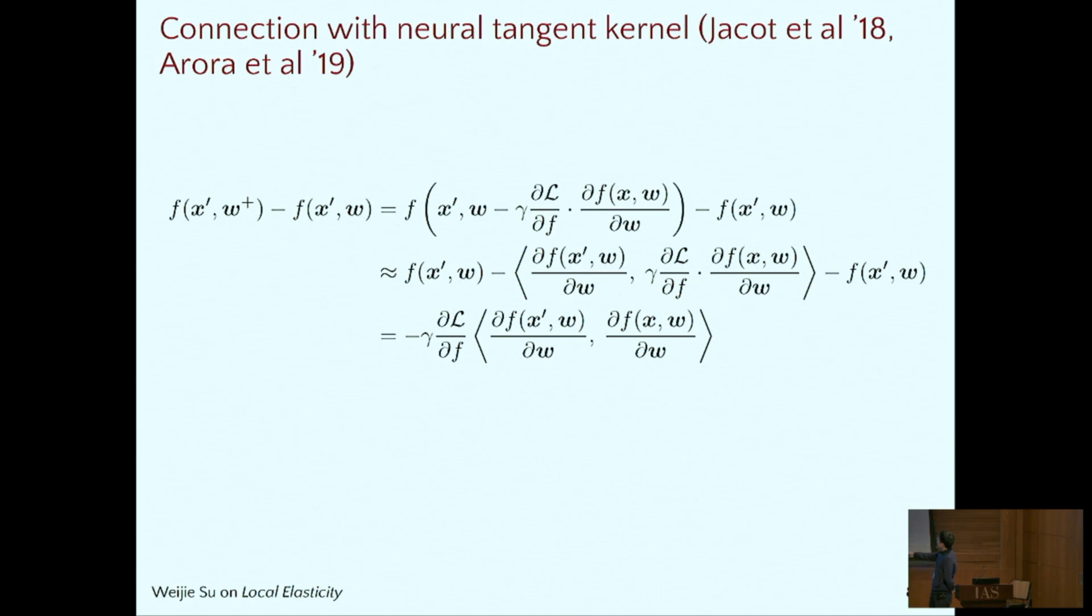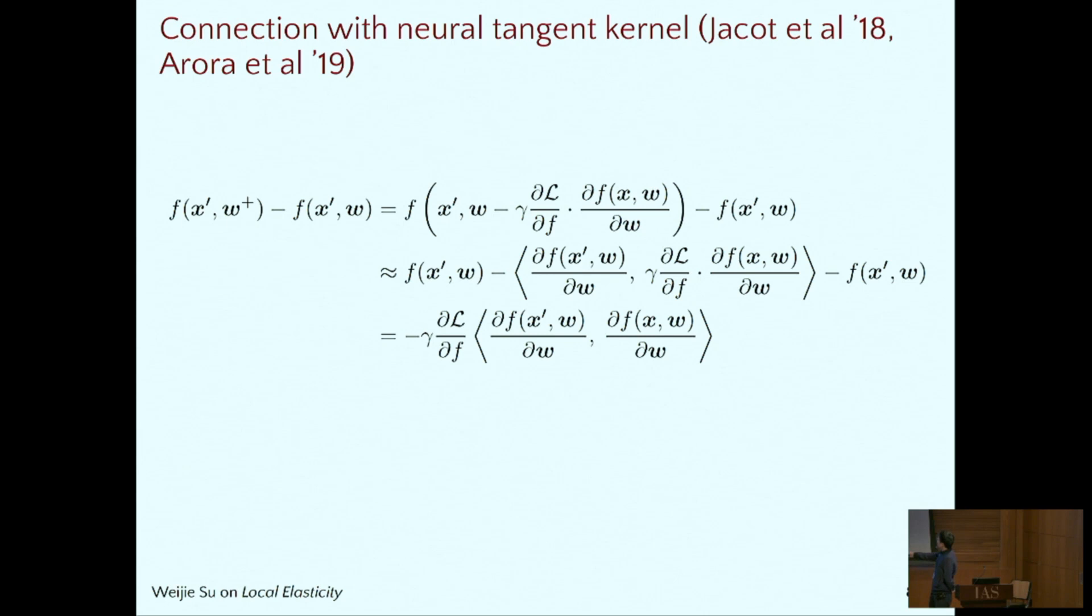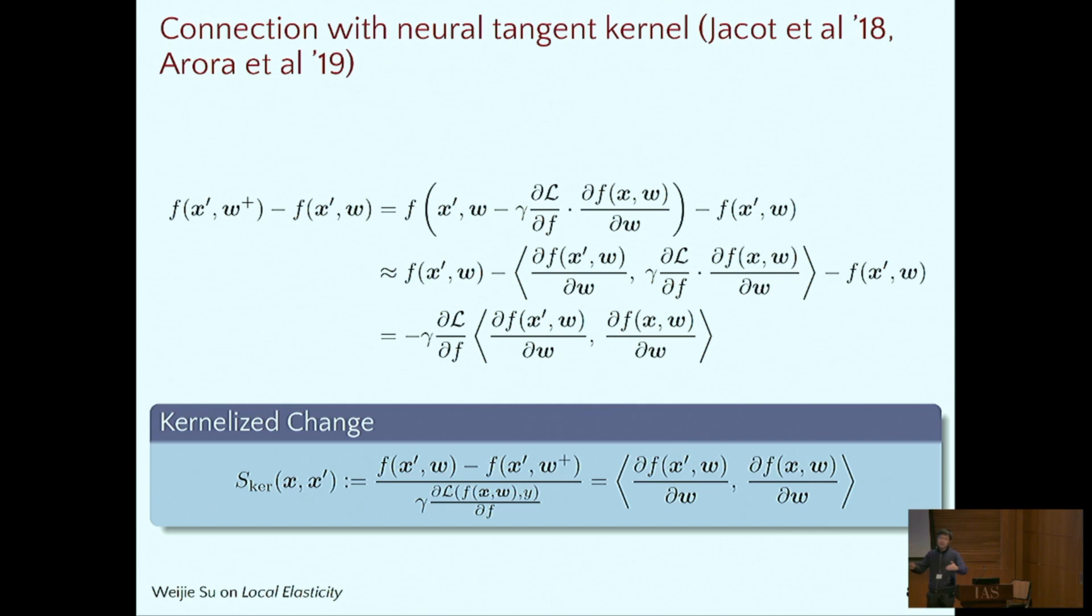There's connection to neural tangent kernel, which is very simple. Actually, we just do Taylor expansion, and finally the change at X prime is basically proportional to the inner product between the two vectors. The vector at X prime and the vector at X. This is precisely almost the definition of neural tangent kernel if we let the weight to be initialized and the widths are infinitely wide. Then this motivates us a new definition. The definition is this. And the two definitions are basically equivalent.